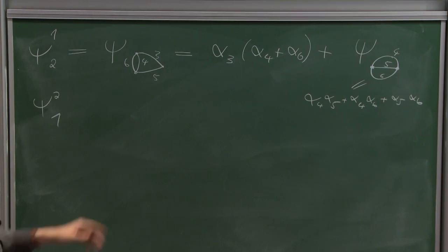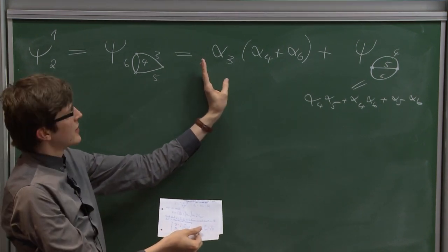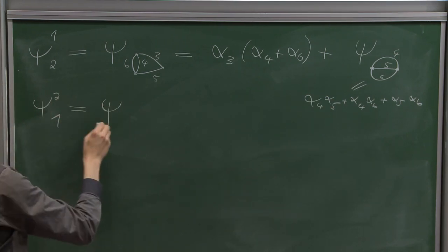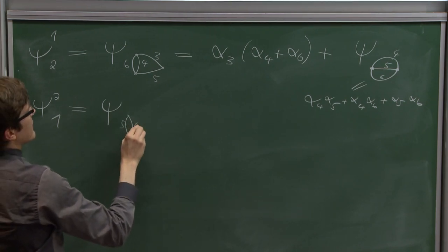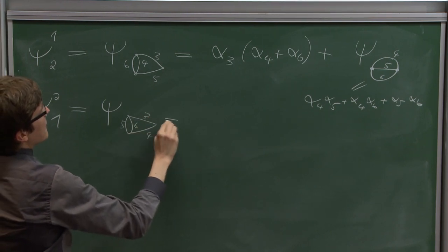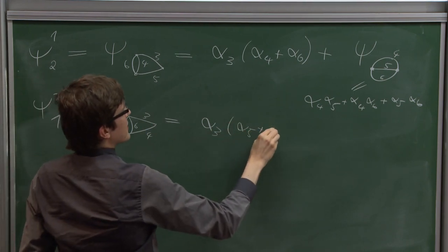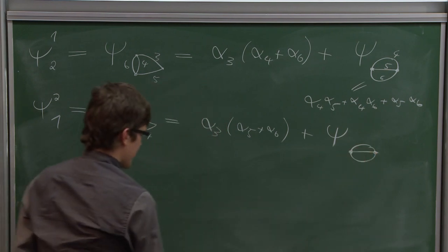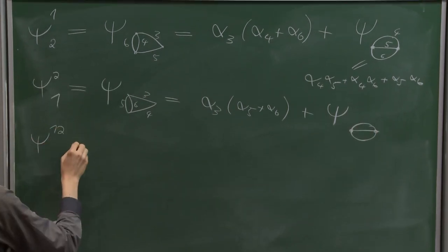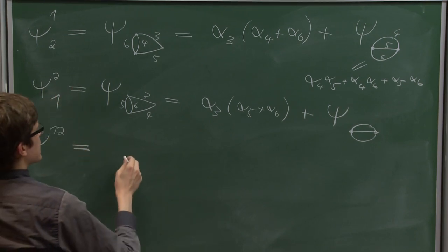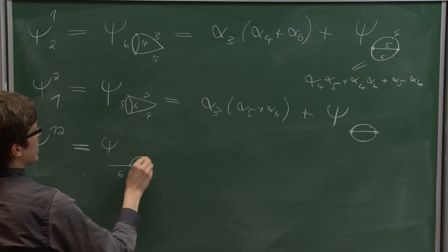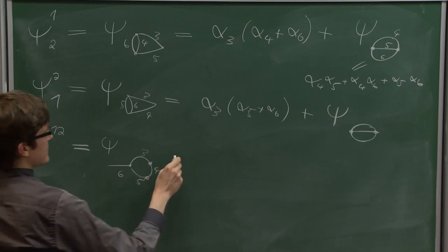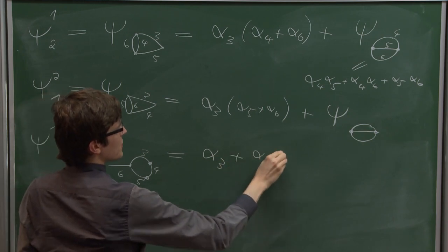Going the other way: deleting edge 2 and contracting edge 1 makes 5 and 6 parallel, leaving 3 and 4. Deleting alpha_3 leaves only alpha_5 and alpha_6 in the loop. When I contract 3, I again get the same sunrise polynomial. For the term psi^{12}, deleting both edges 1 and 2 leaves edge 6 with edges 3, 4, and 5 — a one-loop graph whose polynomial is just the sum of the variables in the loop.